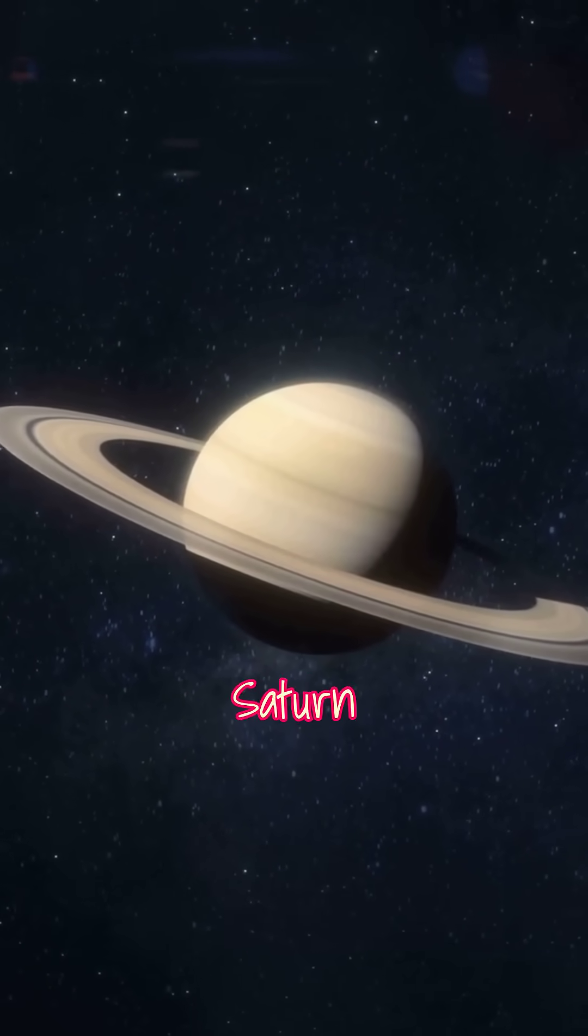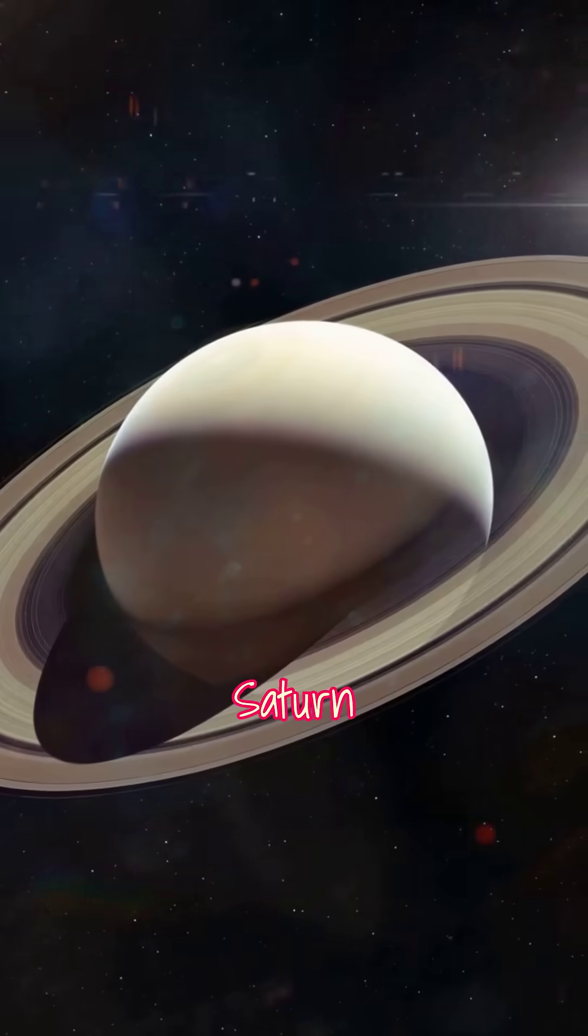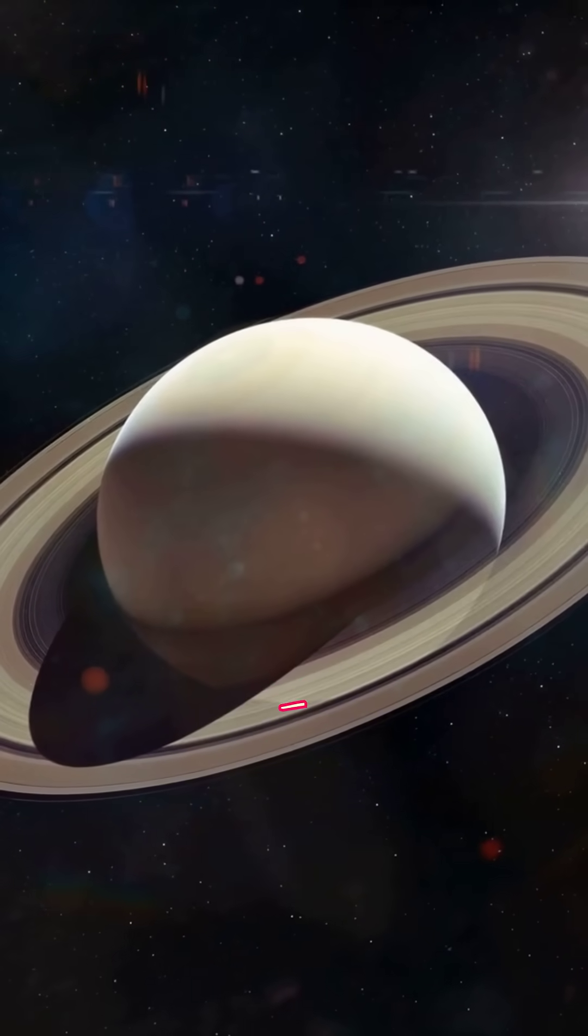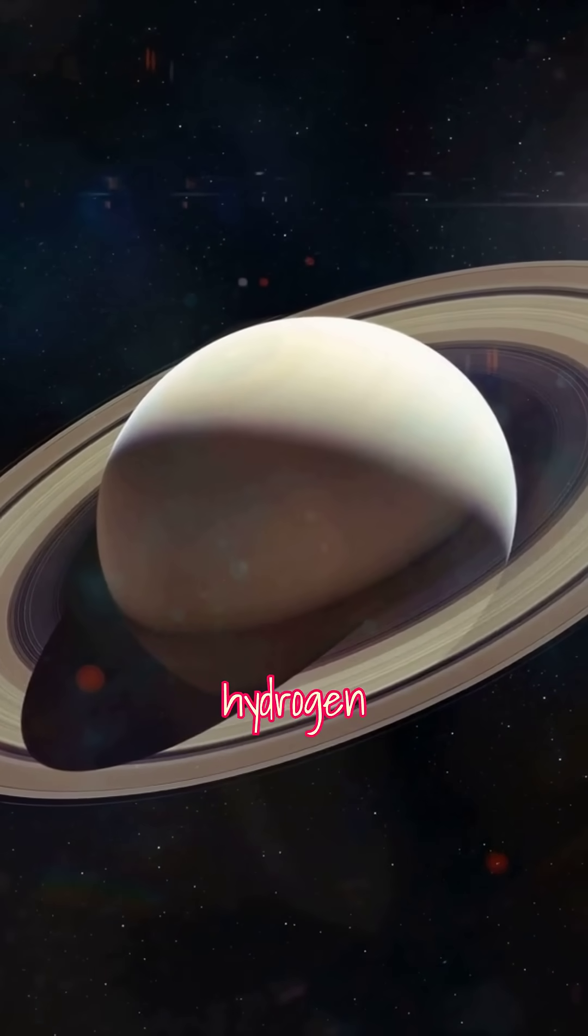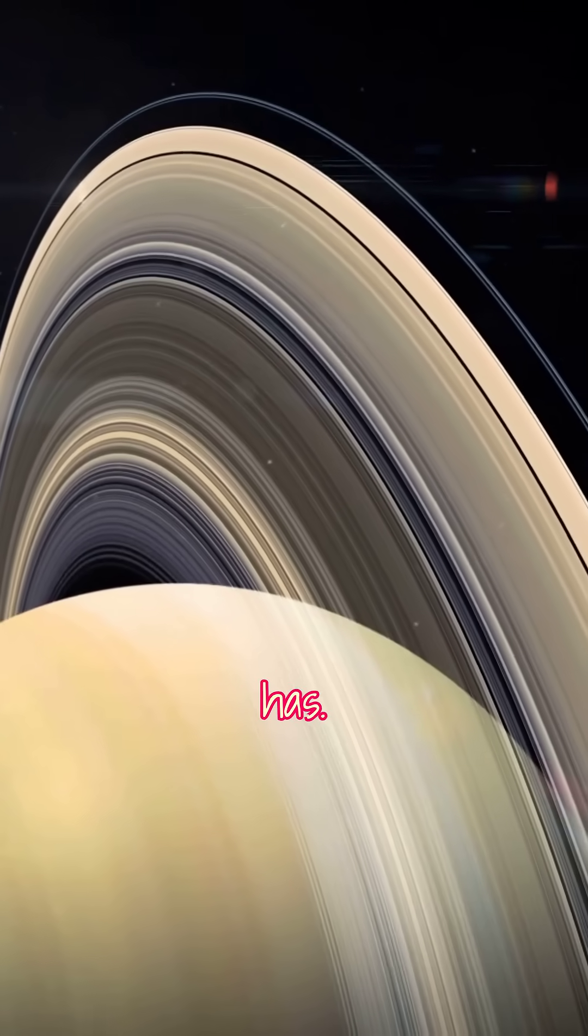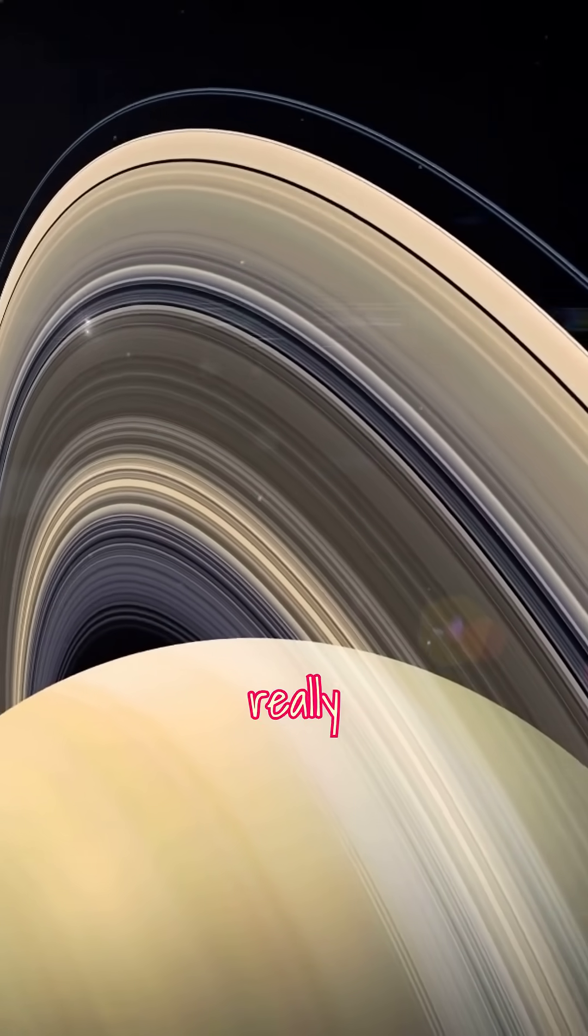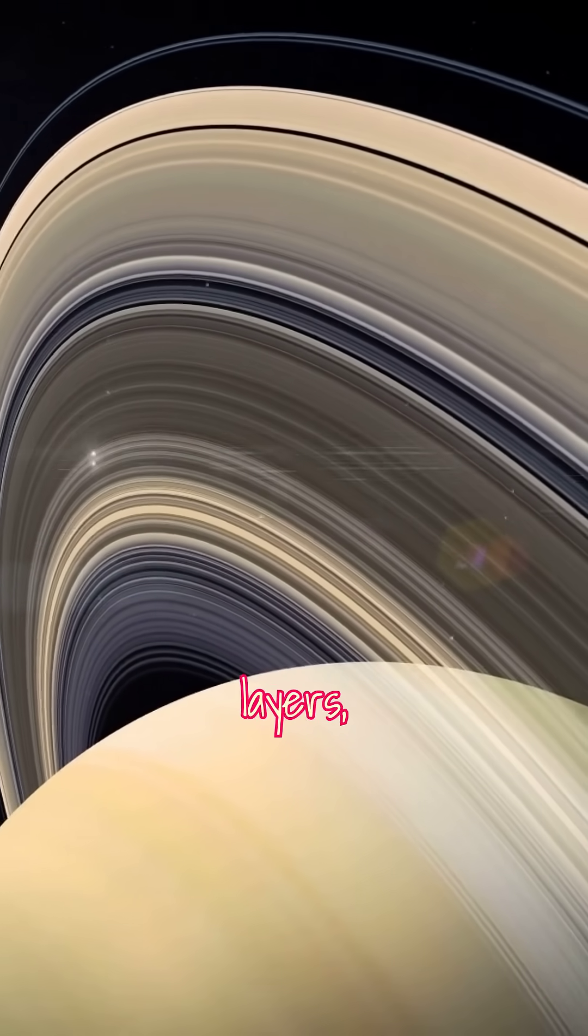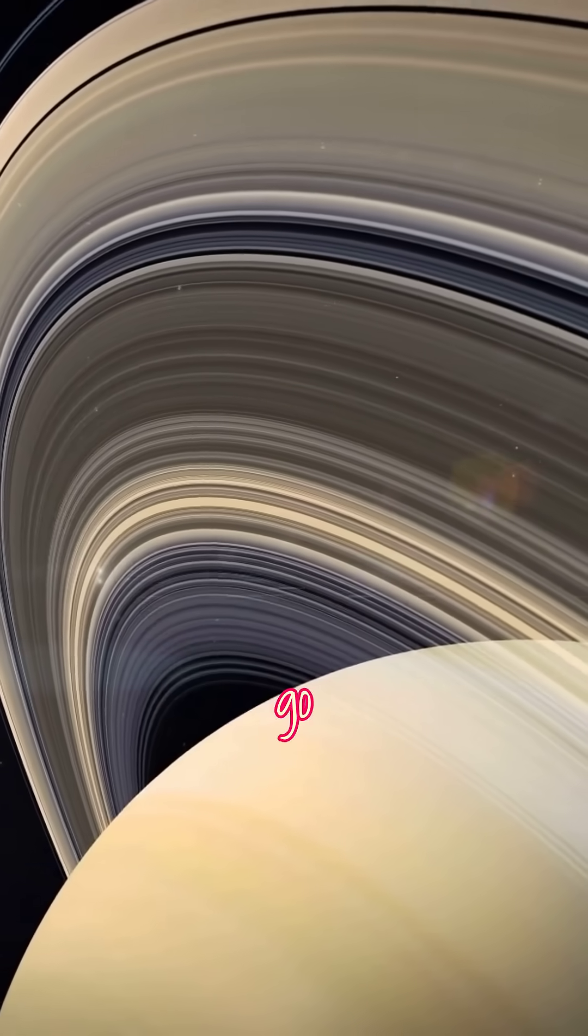First, let's talk about Saturn itself. Saturn is a gas giant, a massive planet made mostly of hydrogen and helium with no solid surface like Earth has. Its visible surface is really just the top of its swirling cloud layers and its weather systems go deep into its atmosphere.